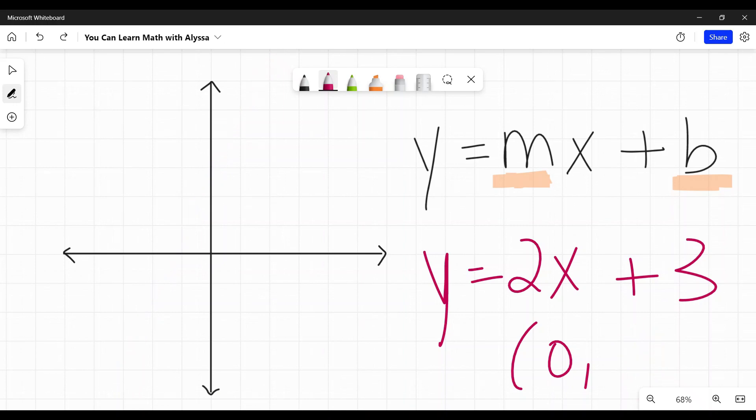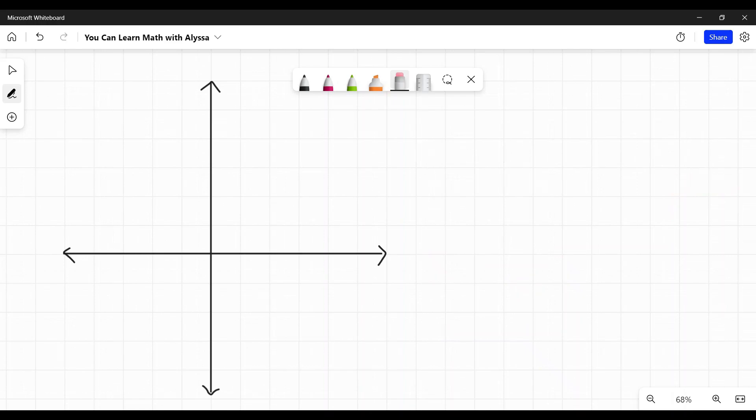Well, what if we're given a line, but it's not in this lovely slope-intercept format? What if it's in the more dreaded standard form, like 3x plus 4y equals 10? What do you do?